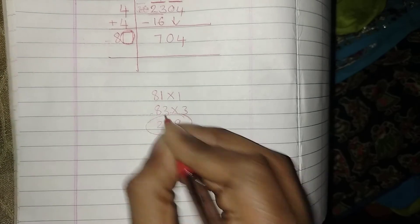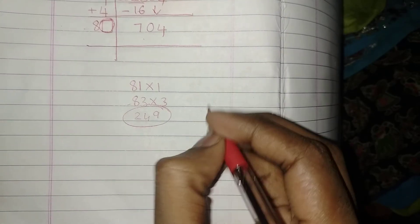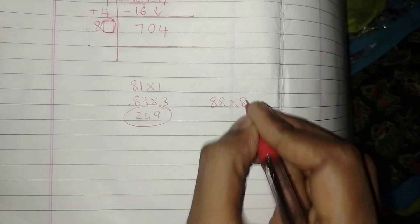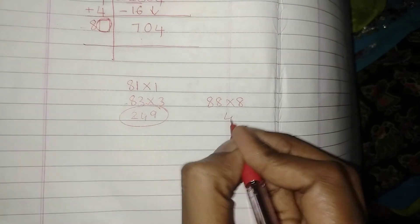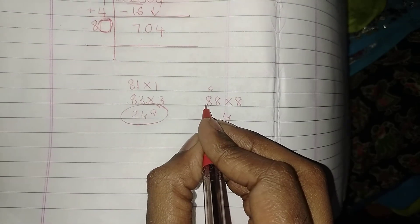Let me make a very high jump and I take 88 into 8. 88 into 8, what is 88 into 8? 8 times 8 are 64, carry 6. 8 times 8 are 64, 64 plus 6 is 70.